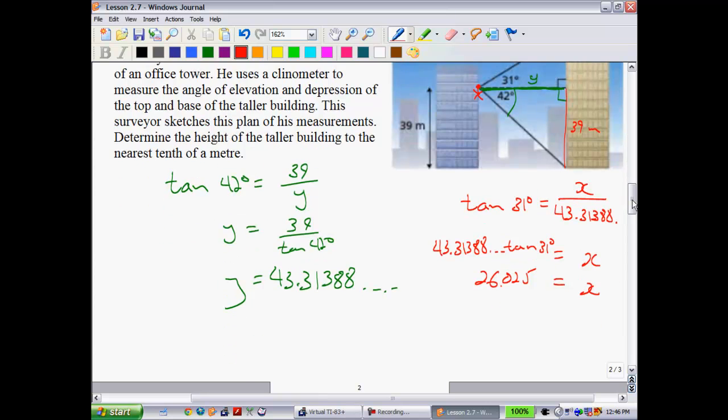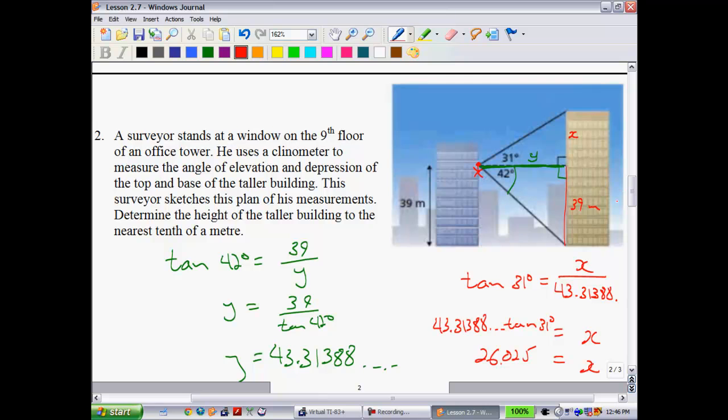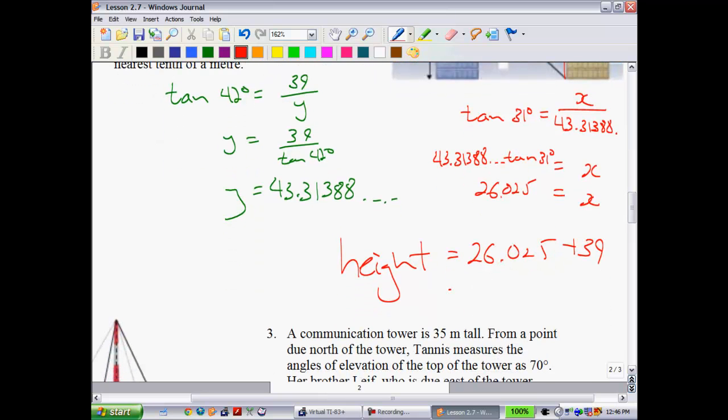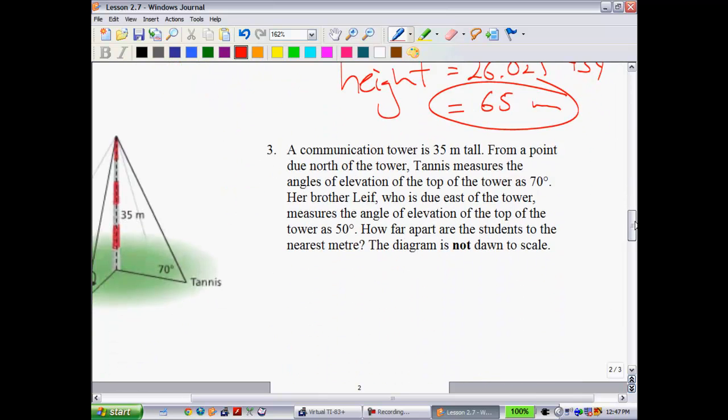That should be enough decimal places. So that's what x is, but now you've got to answer the question. Determine the height of that entire building. Well, the height, if you will, is just going to be this 26.025 plus what that first building was, which was 39. And in total we see, since I think they said to round to the nearest tenth of a meter, that your solution is 65 meters. Not too bad.